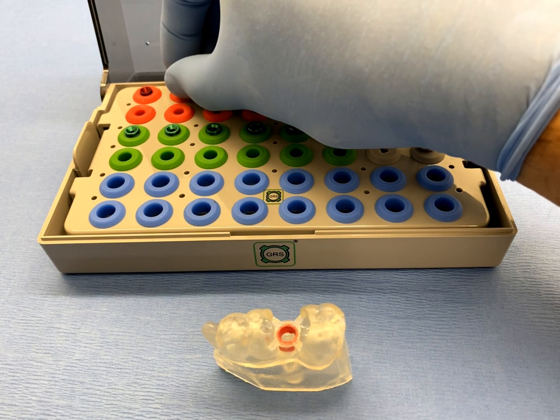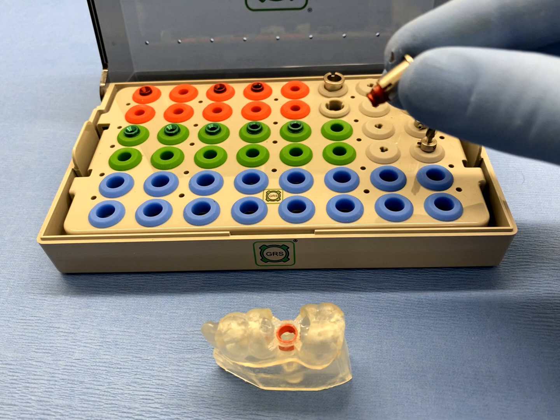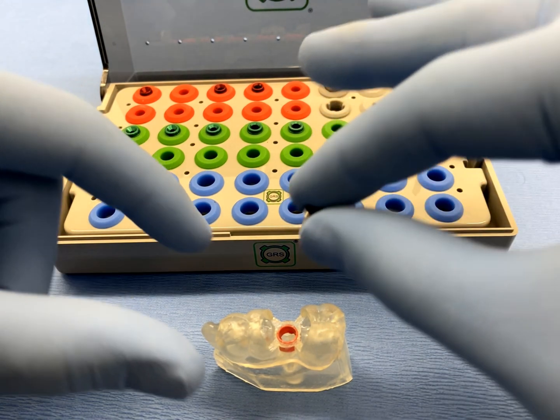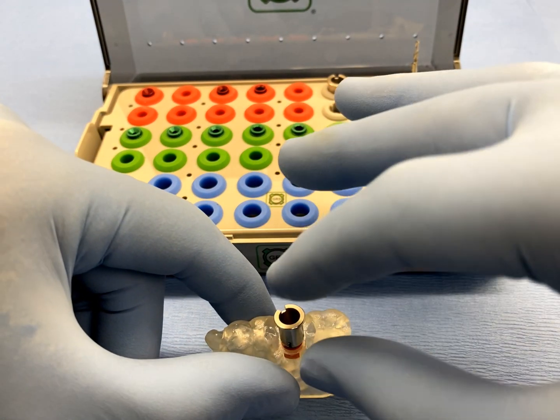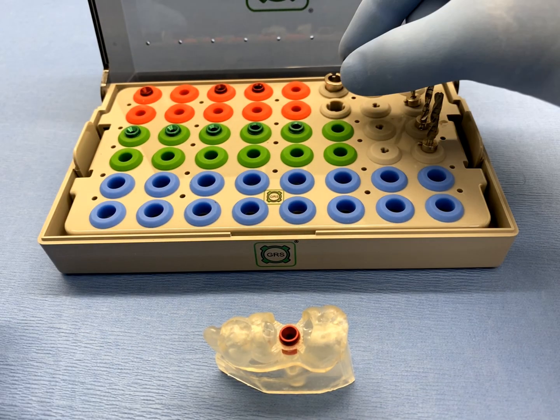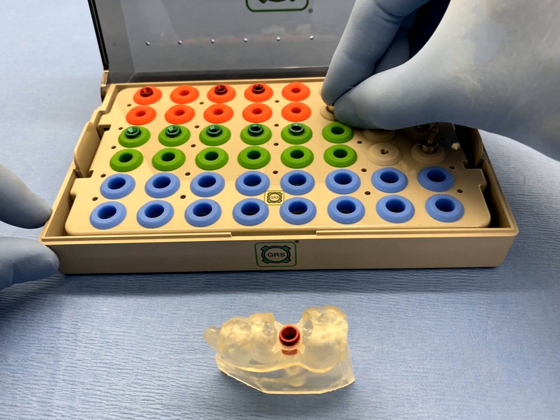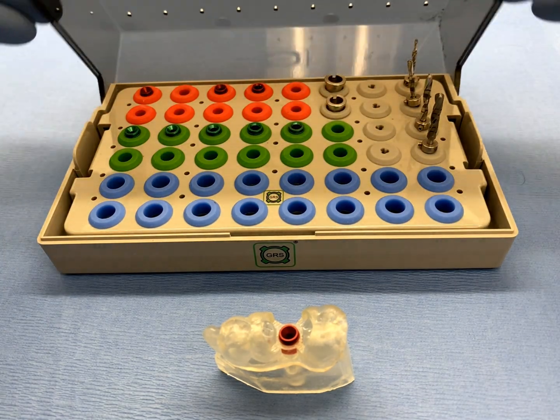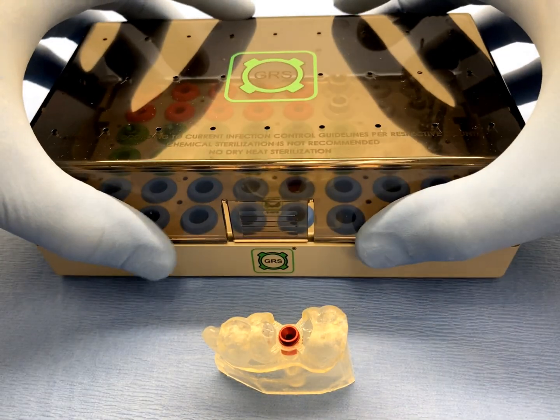If the drill shank cannot pass through the narrow diameter surgical sleeve for the pilot drill, use a 2.35 mm or slightly larger GRS drill sleeve in order to allow the initial drill to insert completely to the bottom of the osteotomy in the 3D printed model.